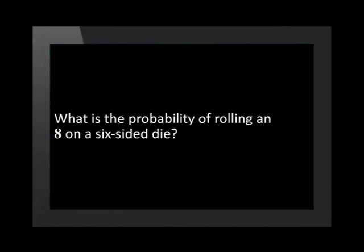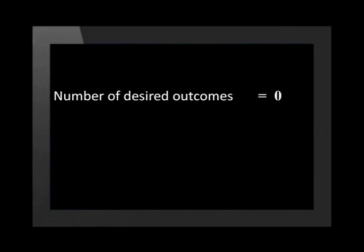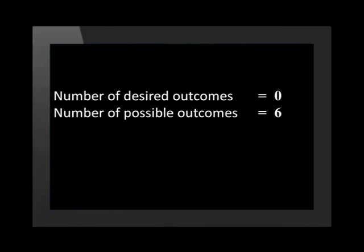What is the probability of rolling an 8 on a six-sided dice? The probability of rolling an 8 is 0. This is because there is no 8 on this dice, making it impossible to roll. The number of desired outcomes is 0, since 8 is not in the possible numbers we can get. The number of possible outcomes is 6: 1, 2, 3, 4, 5, and 6. Therefore, the probability of getting an 8 is equal to 0 over 6.